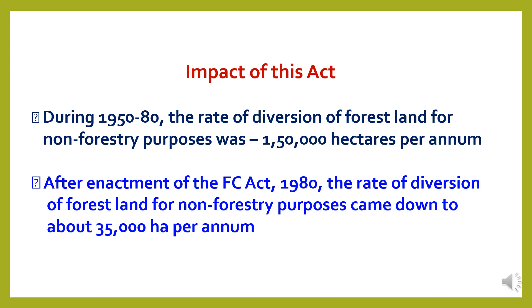What are the impacts of the Forest Conservation Act? During 1950–80, the rate of diversion of forest land for non-forestry purposes was 150,000 hectares per annum. After enactment of the act in 1980, the rate of diversion came down to about 35,000 hectares per annum.